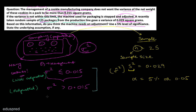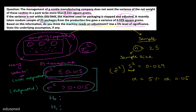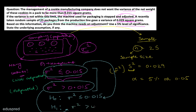The question is which claim to write as the null hypothesis and which as the alternative hypothesis. The claim that has an equal-to sign — sigma squared less than or equal to 0.015 — will be the null hypothesis. The claim without an equal-to sign — sigma squared greater than 0.015 — will be the alternative hypothesis. So the null hypothesis is sigma squared ≤ 0.015, and the alternative hypothesis is sigma squared > 0.015.